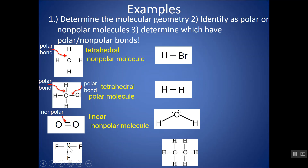And then NF3 here. This N has one, two, three, four domains, with one lone pair. So this is trigonal pyramidal, and this would be a polar molecule — trigonal pyramidal is always polar. There's no way that this can be symmetrical. The way that the F's would be pulling on electrons, there's nothing up here to cancel out those pulls. The N-F bond would also be polar because it's between two different elements with two different electronegativities.